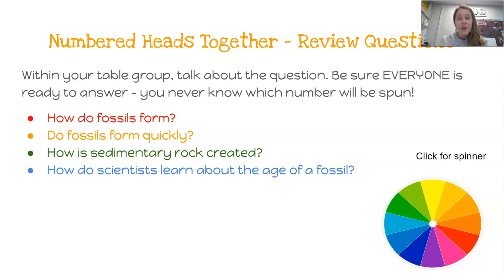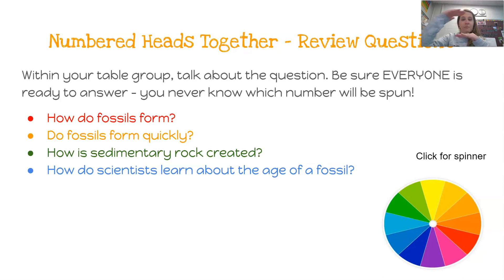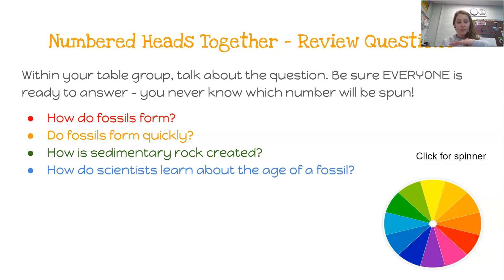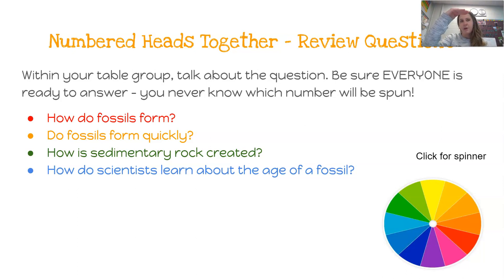We can also look at all these layers of rocks and know that over time new layers are added on to the top. So when we think about how scientists learn about the age of a fossil, we can infer that a fossil way down in the bottom layer is much older than fossils found on top. How deep those fossils are in our layers tells us how old a fossil is.